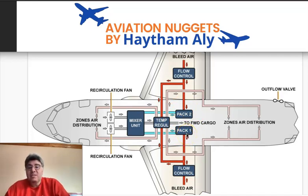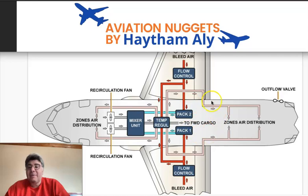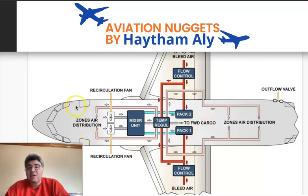How many zones inside the fuselage will the packs supply? We have three zones: the cockpit, the forward cabin, and the aft cabin. The pilots have three selectors to individually select the temperature in each zone. PACK 1 supplies the cockpit, and PACK 2 supplies both the forward cabin and the aft cabin.